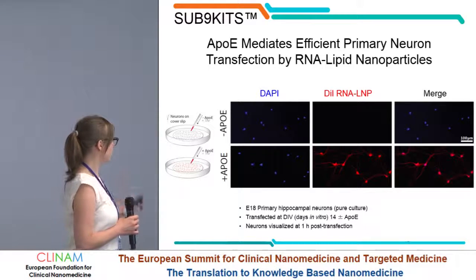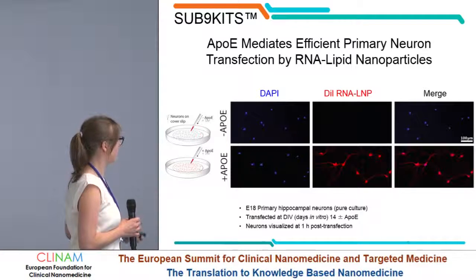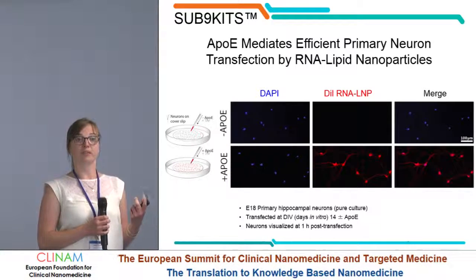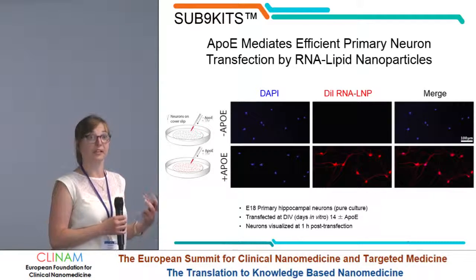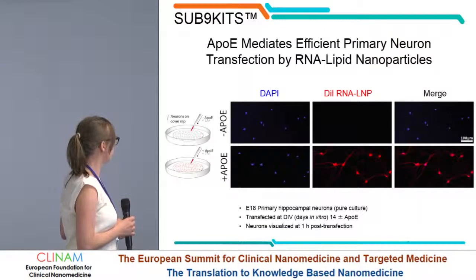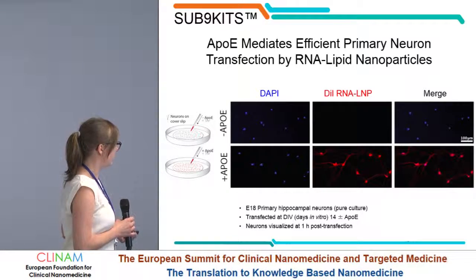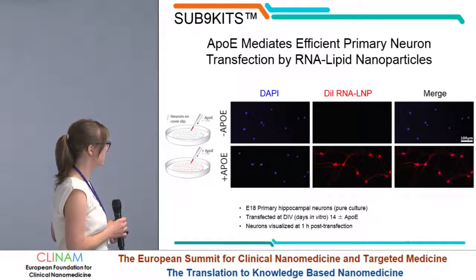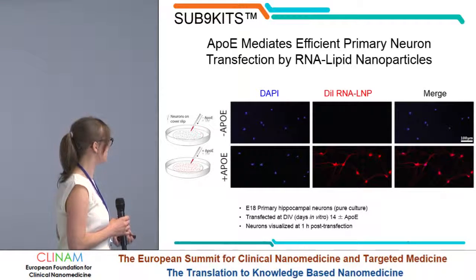This is an APOE-related mechanism, and here is the in vitro data for that in primary neurons — knowing that primary neurons are hard-to-transfect cells. When lipid nanoparticles are added without APOE, there is no uptake. Whereas when APOE is added, we see nice red fluorescence from the labeled lipid of the nanoparticles merging with the cells.